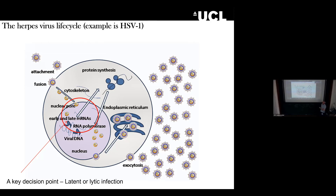The capsid releases the viral DNA, and the thing about herpes viruses is they have their own DNA polymerase — they don't need the cellular DNA polymerase to replicate their genome. Because of that coding capacity, they have their own DNA polymerase, though they do use host RNA polymerases. They don't have their own RNA polymerase, but they use their own DNA polymerase. You get viral replication.